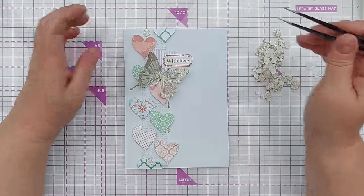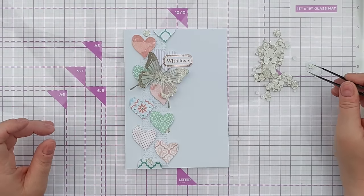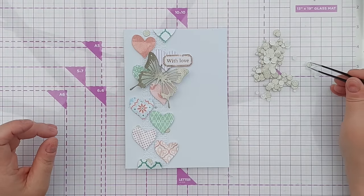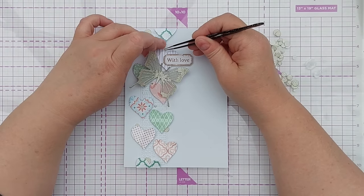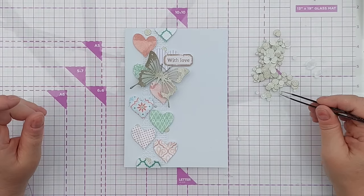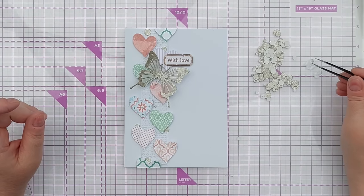You can actually put glossy accents or crystal glaze over the top of these little gold circles if you want to create a bit of extra shine and dimension.